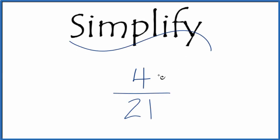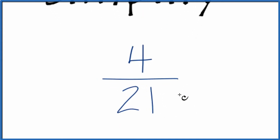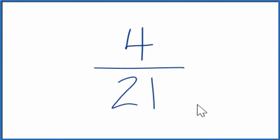All right. Let's simplify the fraction 4/21. When we're simplifying fractions, we're trying to find another fraction that's equivalent or the same as 4 over 21, has the same value, but we've reduced it to lowest or simplest terms.